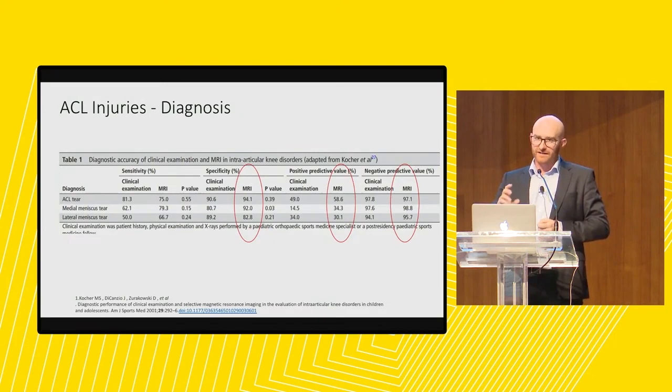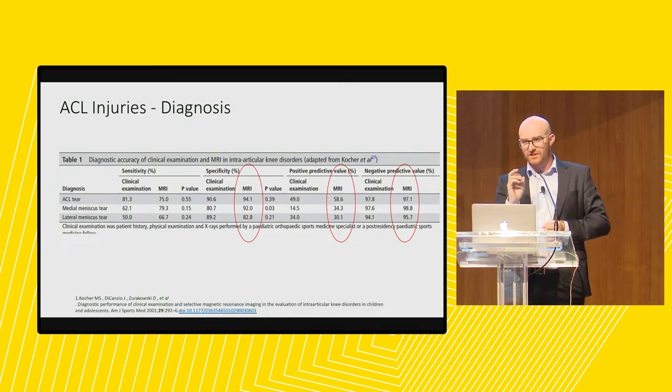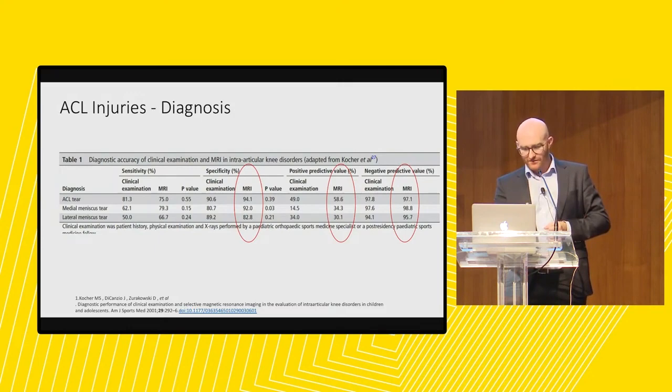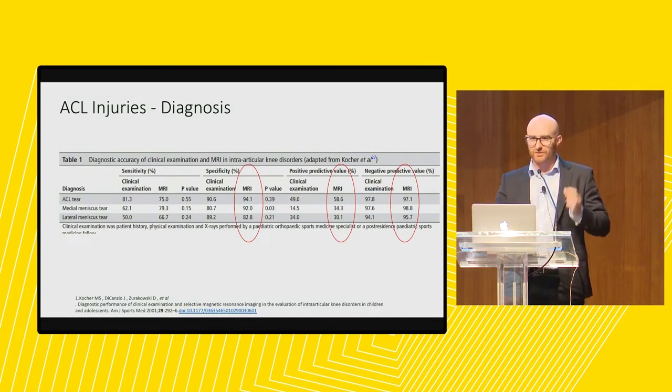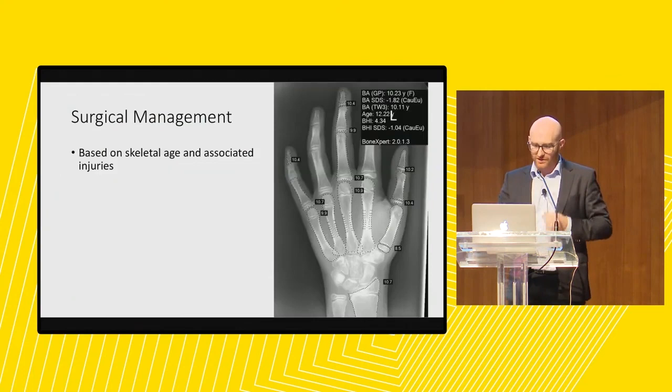Looking at MRI sensitivity and specificity data, an MRI is specific — if you think someone has an ACL injury and the MRI confirms it, they likely do. However, the sensitivity of MRI for the paediatric population is only 75%, meaning an MRI scan will miss 25% of paediatric ACL injuries. That's why clinical examination combined with MRI is very important. Don't just send them off for an MRI scan.